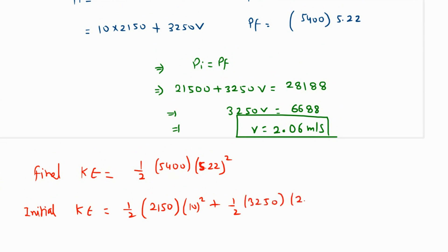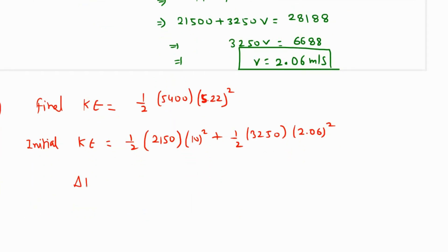So the change in the kinetic energy will be the final kinetic energy minus the initial kinetic energy. Let me just grab my calculator and find this. So 5.22 squared times 5400 over 2, this value is coming as 73570.68.